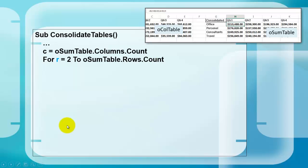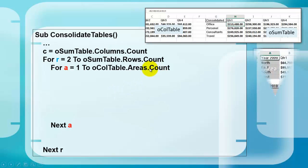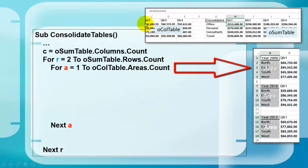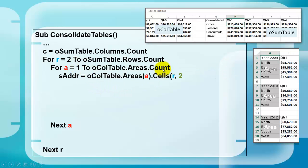We loop through all the rows of the sum table. We count the number of rows. We run from row 2 through row 5. We close the loop. We do another loop through all the areas of the O column table way to the left. How many areas do we have? We run from one to the last one.